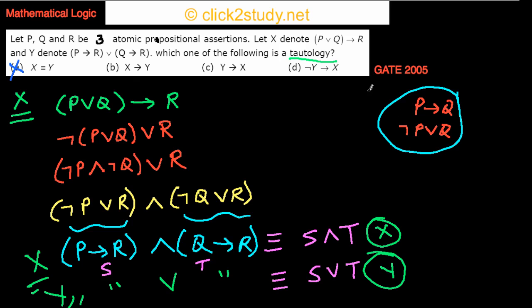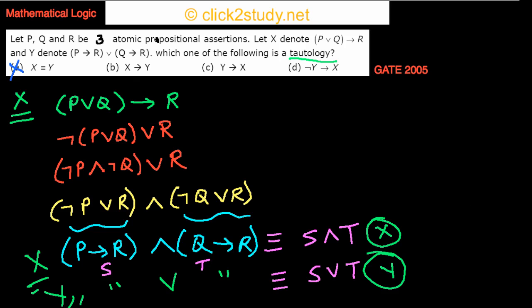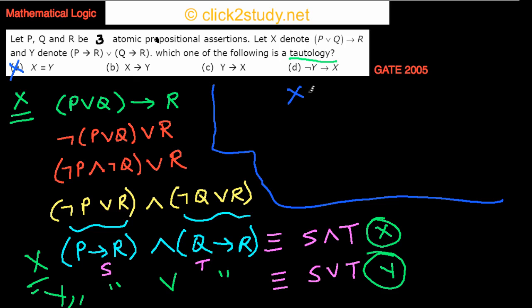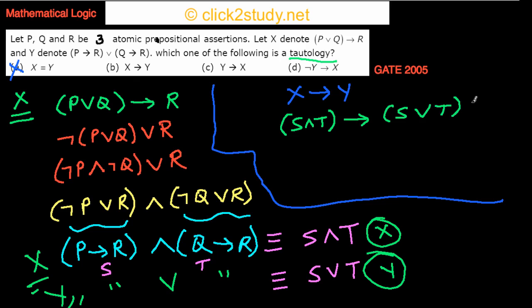Let's check whether (S and T) implies (S or T) is a tautology. We need to verify this is always true. Assume the antecedent (S and T) is true — we then show the consequent (S or T) must also be true.